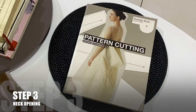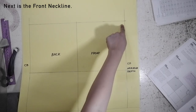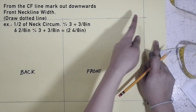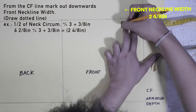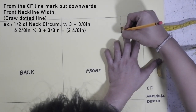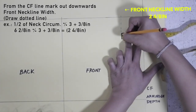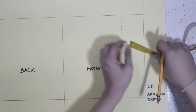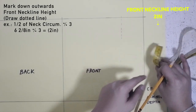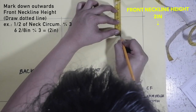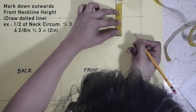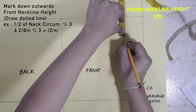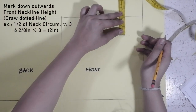Step three: neck opening. Next is the front neckline. From the center front line, mark out downwards the front neckline width and draw a dotted line — pause this video for the formula. Next, mark down outwards the front neckline height and draw a dotted line — pause this video for the formula.